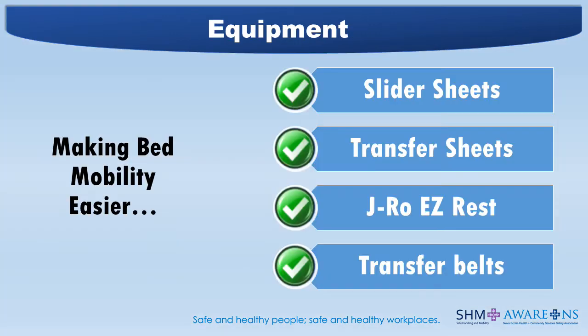Make bed mobility easier with equipment like slider sheets, J-ROW Easy Rest, transfer sheets, and transfer belts. Are you familiar with any or all of these items? Over the next series of slides, we will be reviewing each piece of equipment in detail.